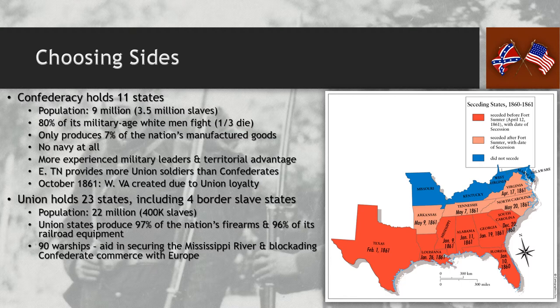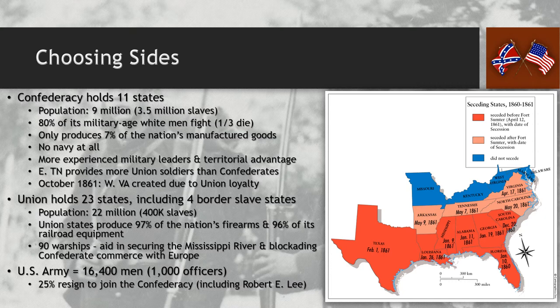The Union also has 90 warships, which are instrumental in securing the Mississippi River and eventually blockading the Confederacy from getting aid from Europe. The U.S. Army under the Union has 16,400 men with 1,000 officers. However, 25% of them end up resigning to join the Confederacy, one of whom is Robert E. Lee.